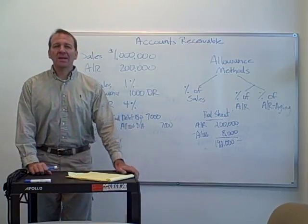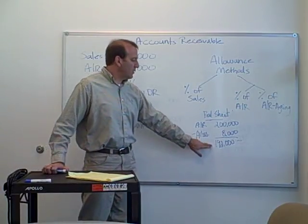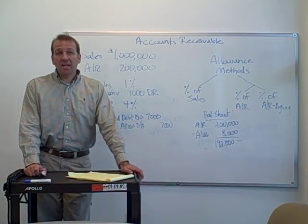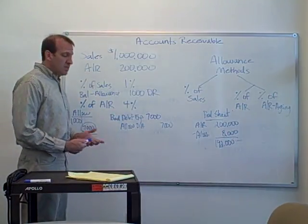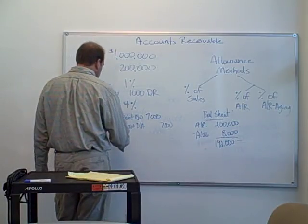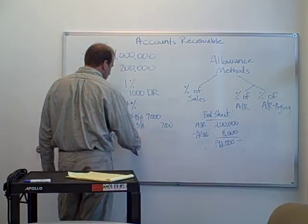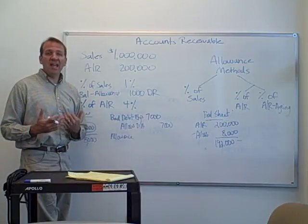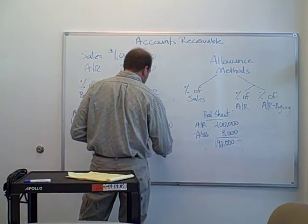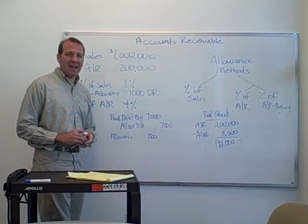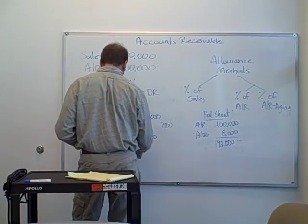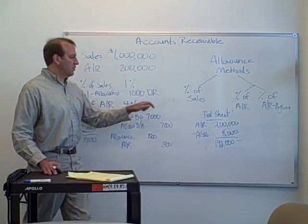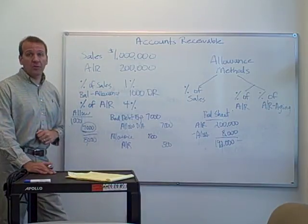What happens when a customer doesn't pay us? Let's say on January 1st the next year, we call up a customer and they say they're not going to pay their $500 balance. The write-off entry is: debit the allowance for doubtful accounts and credit accounts receivable. That's the purpose of the allowance — money set aside for customers that won't pay. This write-off entry is the same whether you're using percentage of sales, percentage of accounts receivable, or percentage of accounts receivable aging.